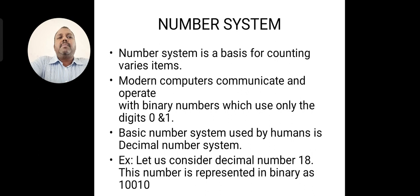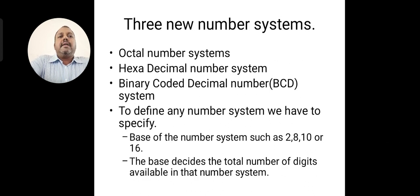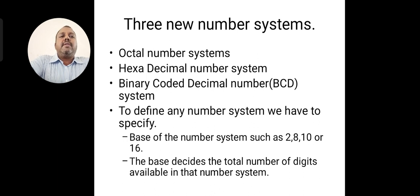The basic number system used by humans is the decimal number system. For example, the decimal number 18 has the equivalent binary representation of 10010. They have three different types of number systems available: octal number system, hexadecimal number system, and binary coded decimal number systems. To define any number system, we have to specify the base of the number system.